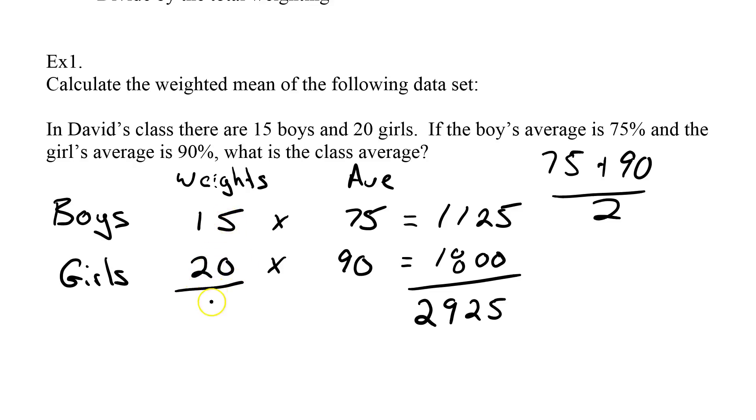15 boys, 20 girls is 35. So I take my 2,925. I divide by my total weights, which is 35. And I get an answer of 83.571. Two decimal places will give me 83.57%. So in this case, the girls average of 20 girls average of 90. That's going to bring my mean higher because I've got more girls than boys.